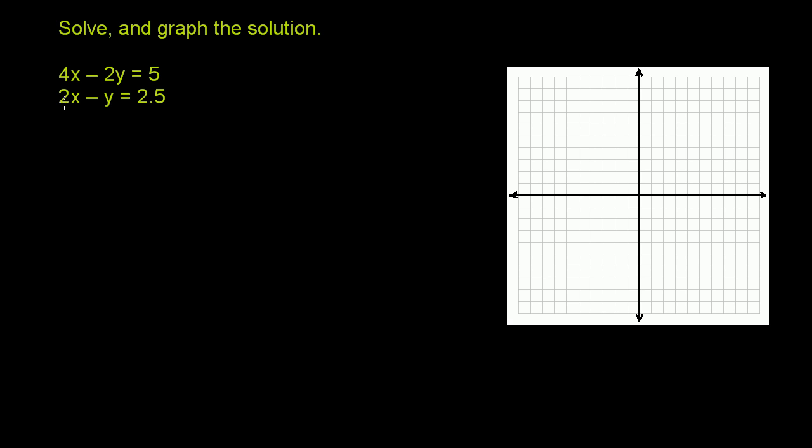But if we can multiply this 2x by negative 2, it'll become a negative 4x. And then when you add it, they would cancel out. So let's multiply this equation, the second equation, by negative 2.